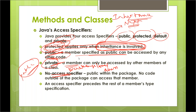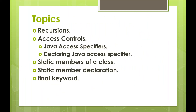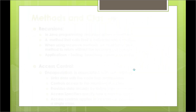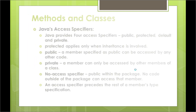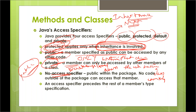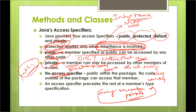Private means that particular member is visible only within that class. Code within a class can only access private members. If you say a member is private, that member can only be accessed within that particular class — outside it is not at all accessible.